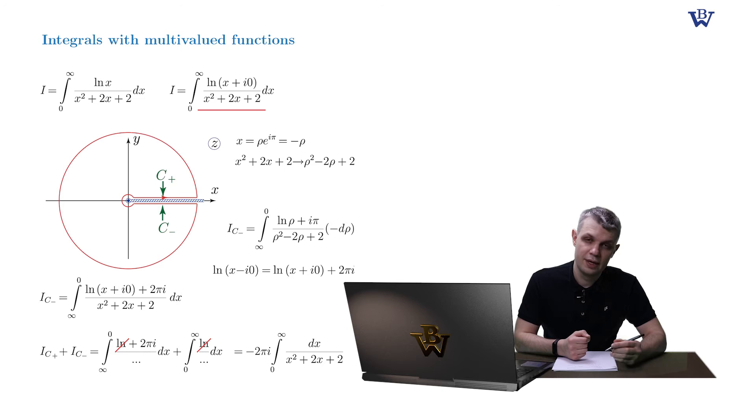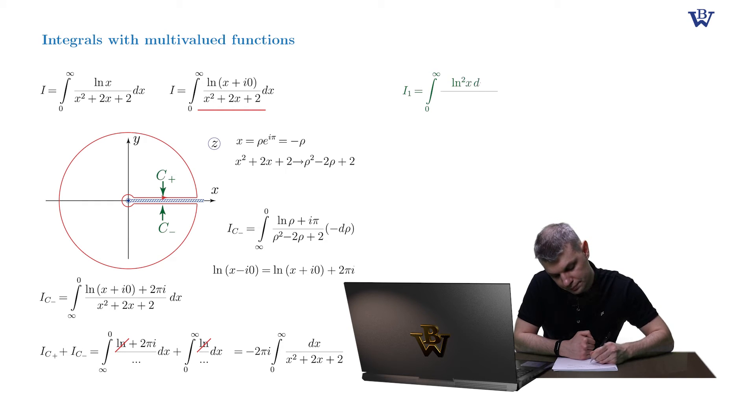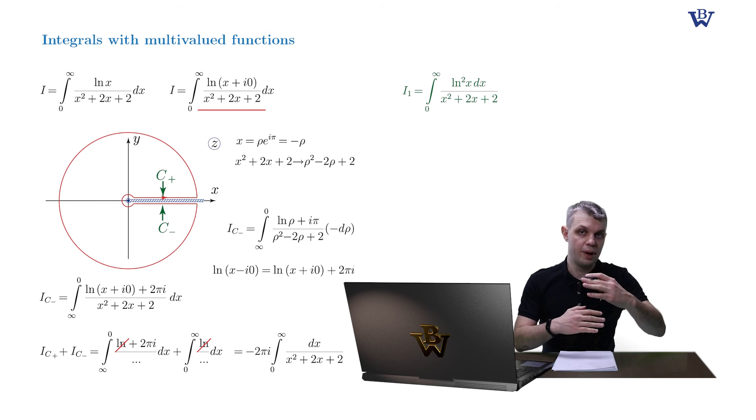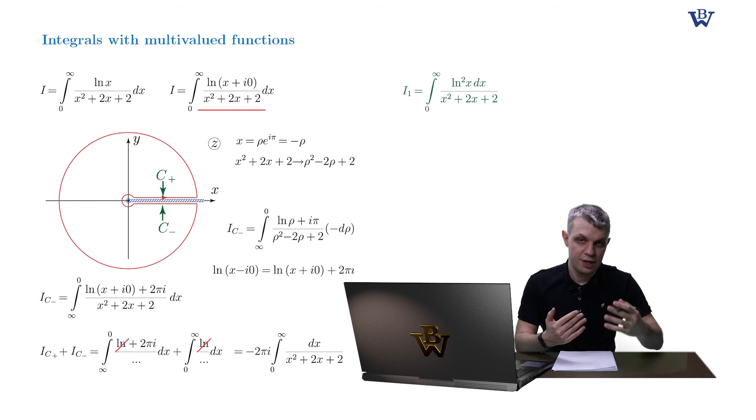How do we change it? It's interesting that the necessary change is almost obvious. We substitute the log function in the numerator with log squared. So instead of the original integral, we consider a modified integral, let's call it i1, with the square of the log instead of the log in the numerator. The principal difference from the first case is that now the integrals along the upper and lower banks of a branch cut subtract in a different manner.